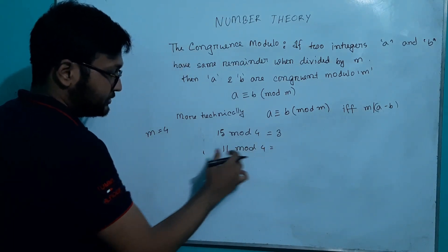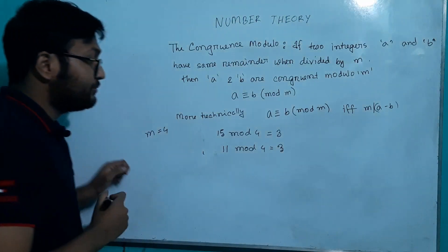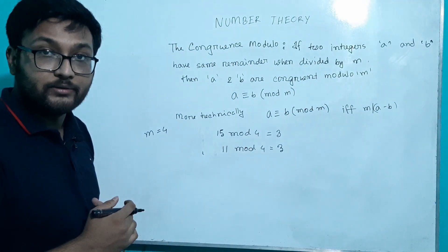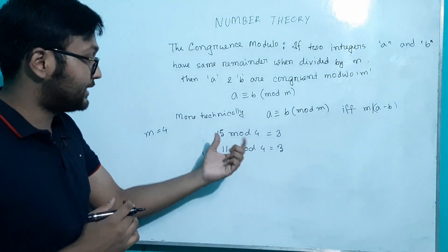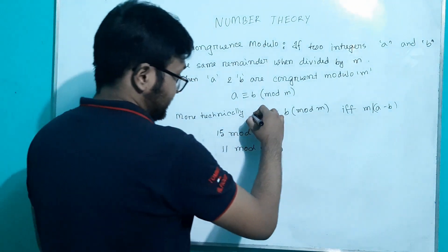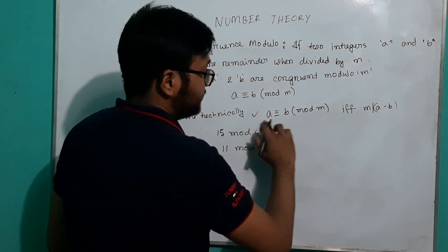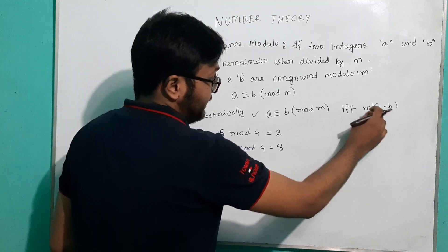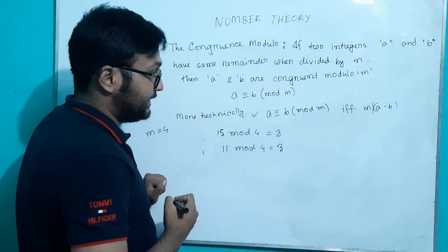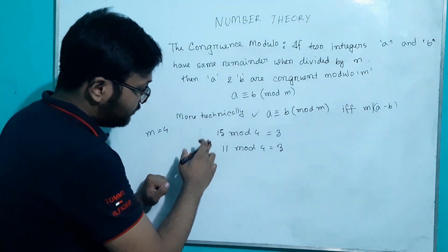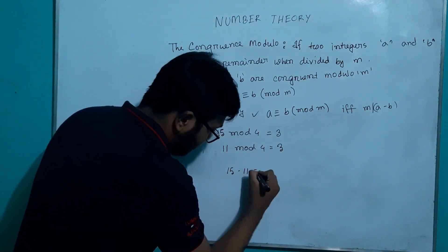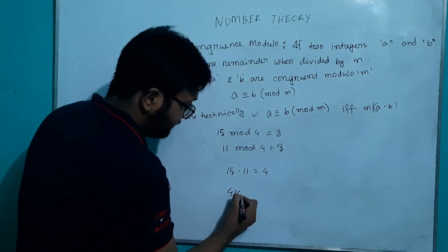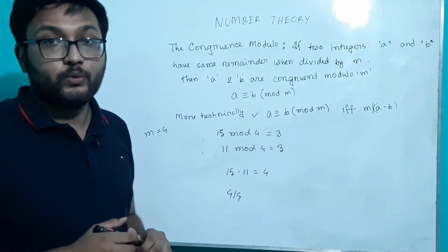And b is 11 (egaro). We check the difference: 15 minus 11 equals 4. If we get 4, divided by 4, then we confirm the congruence modulo relationship holds.